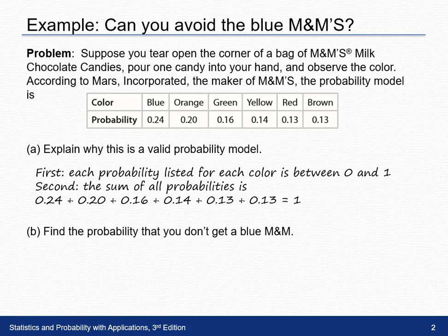The second thing we need to check is that the sum of the probabilities is 1, and if you do add up each of the probabilities, that adds up to a total of 1, so that tells us, yes, this is a valid probability model.